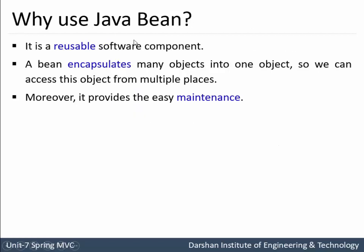Why use Java bean? It is a reusable software component, so it can be reused. Second, a bean encapsulates many objects into one object, so we can access this object from multiple places. Third, it provides easy maintenance as it follows MVC architecture, so maintenance is comparatively easier.